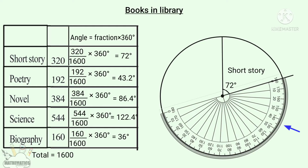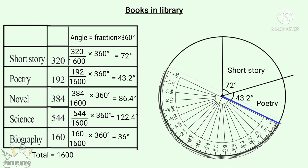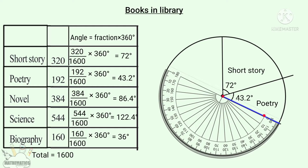We mark 43.2 degrees: 0, 20, 40, 43.2. Then we place the Novel segment. Using the protractor we measure 86.4 degrees: 0, 20, 40, 60, 80, 85, 86.4.